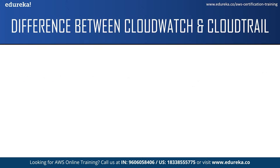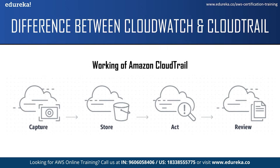Now let us look at the working of Amazon CloudTrail. CloudTrail captures and records user activities in AWS services as CloudTrail events. It delivers these events to the CloudTrail console and stores them in S3 buckets. After the events are delivered to the CloudTrail console, you can review all recent activities in your account and also use CloudWatch events and alarms to set important automatic actions.